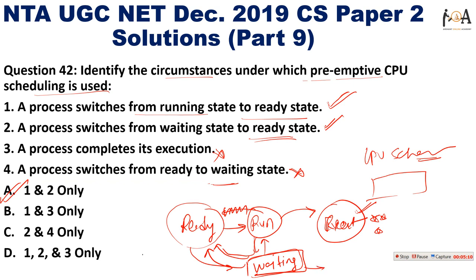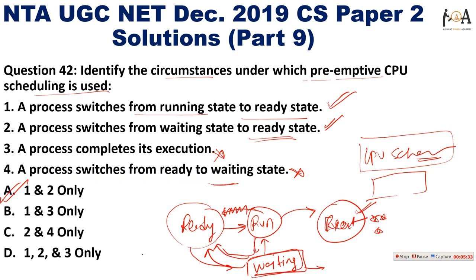If a process is waiting too long in the running state and needs to return to ready state, preemption is required; otherwise deadlock may occur. Similarly, a process switching from waiting to ready may need preemptive scheduling. For full clarity on this concept, watch the CPU scheduling chart lecture, or comment so we can create that lecture.